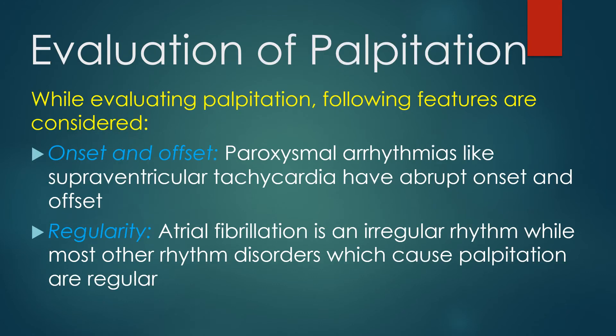While evaluating palpitation, the following features are considered. First, onset and offset: paroxysmal arrhythmias like supraventricular tachycardia have an abrupt onset and offset. Second, regularity: atrial fibrillation is an irregular rhythm, while most other rhythm disorders which cause palpitation are regular.